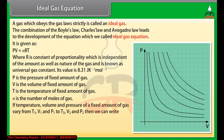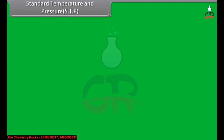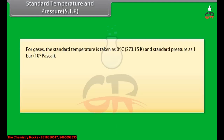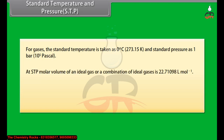If temperature, volume, and pressure of a fixed amount of gas vary from T₁, V₁, P₁ to T₂, V₂, P₂, we can write the combined gas law. Standard temperature and pressure (STP): for gases, the standard temperature is 0°C or 273.15 K and standard pressure is 1 bar or 10⁵ Pascal. At STP, the molar volume of an ideal gas or a combination of ideal gases is 22.71098 L/mol. Another unit for pressure measurement is Torr; 1 Torr = 133.322 Pascal.